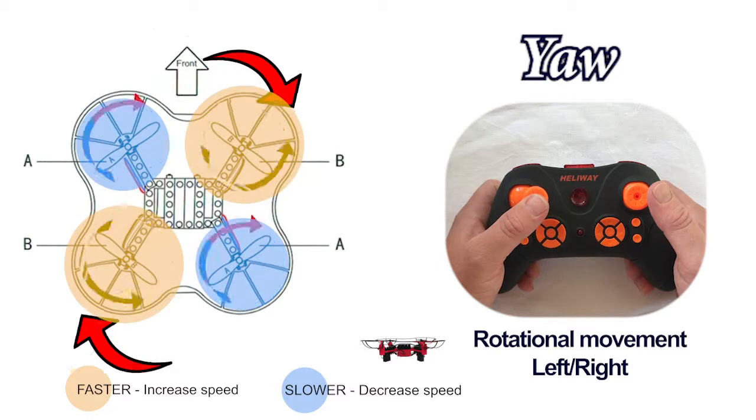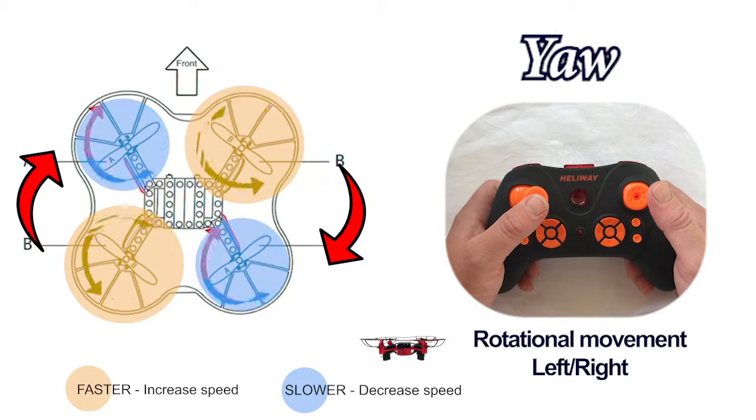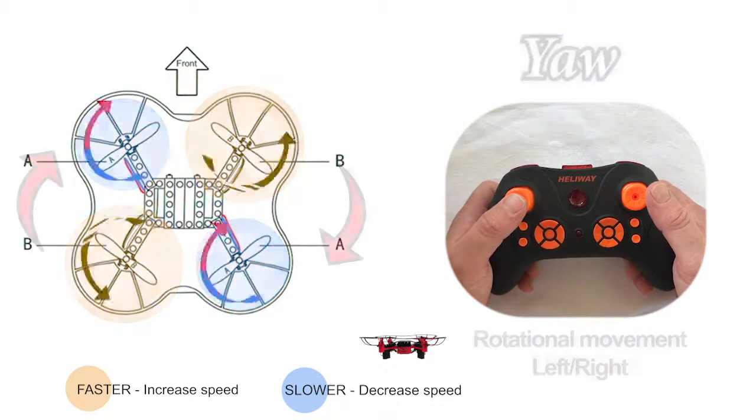Push the left stick to the right and the opposite happens. The B propellers speed up and the torque makes the drone yaw to the right or in a clockwise direction.